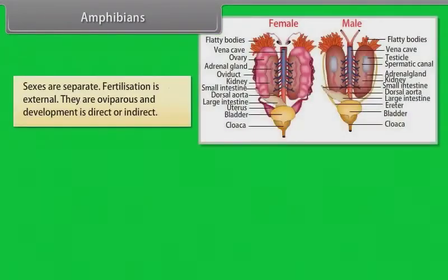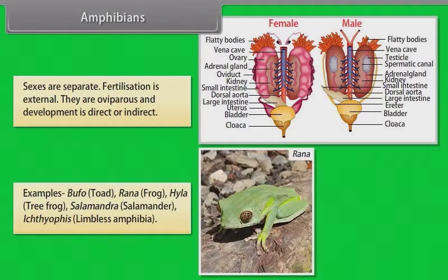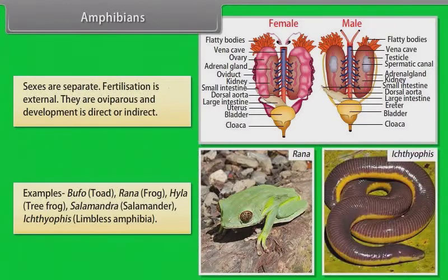Sexes are separate. Fertilization is external. They are oviparous and development is direct or indirect. Examples: Bufo (Toad), Rana (Frog), Hyla (Tree Frog), Salamandra (Salamander), Ichthyophis (Limbless Amphibia).